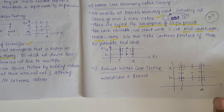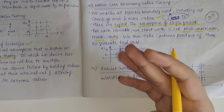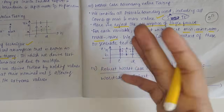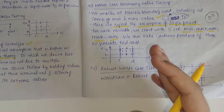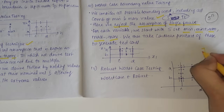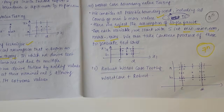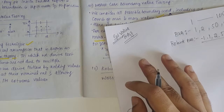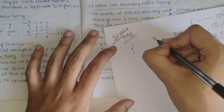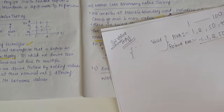Robust worst case BVA is a combination of worst case plus robust. It follows the generalization pattern of boundary value analysis. Best applied where physical variables have numerous interactions and when failure of a function is extremely costly. It generates 7^n test cases. Special value testing depends on the inputs given — all inputs produce only valid output cases.